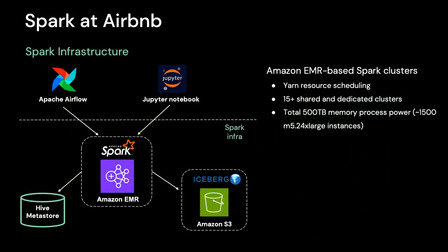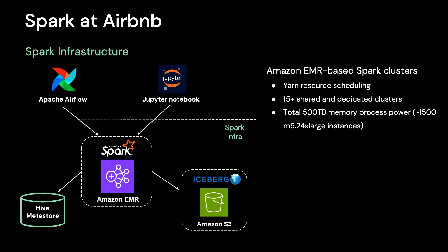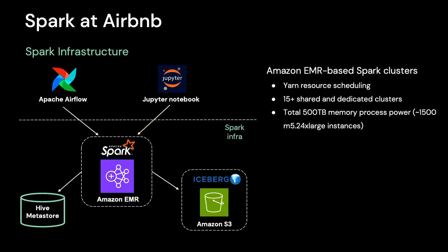Let me first give you an overview of the Spark ecosystem at Airbnb. The Spark data platform runs entirely on AWS. We use EMR YARN clusters for the Spark platform, distributing Spark jobs across more than 15 clusters with a combined processing power of 500 terabytes of memory. Our persistent data store is S3, and we use Hive Metastore to store table entity metadata. To address data consistency and performance issues with the Hive table format, we are adopting Apache Iceberg. We use Airflow to schedule our workload, enabling users to author and schedule recurring Spark jobs. We also provide a Jupyter notebook environment for users to run recurring Spark queries.